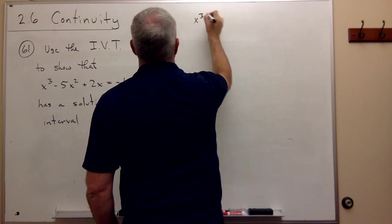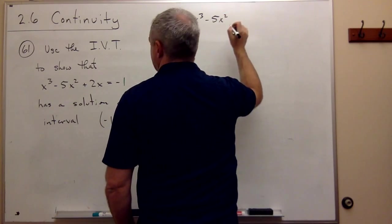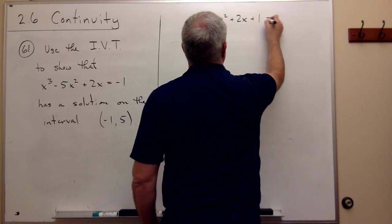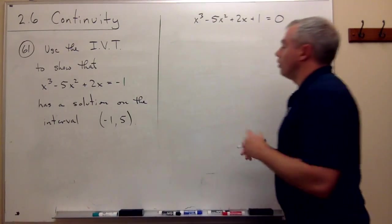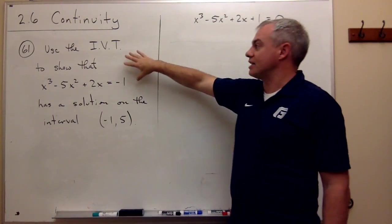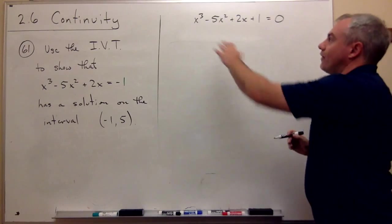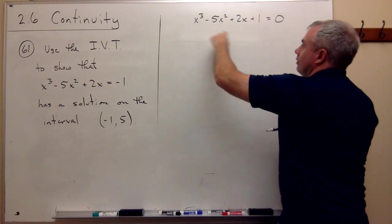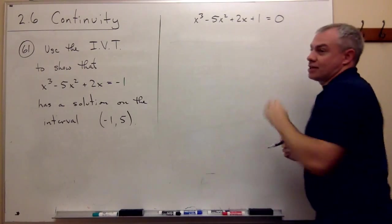x cubed minus 5x squared plus 2x plus 1 equals 0. So another way of saying this exact same problem is, can I find an x value so that if I plug x into the left side, I get 0?